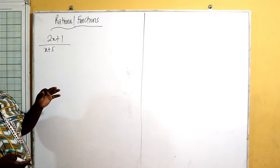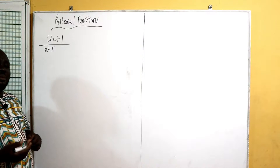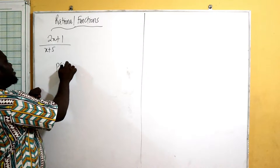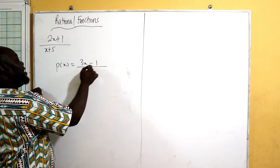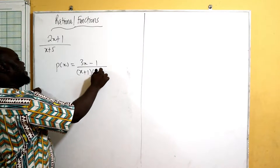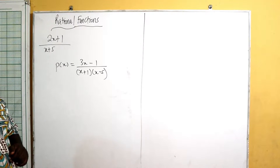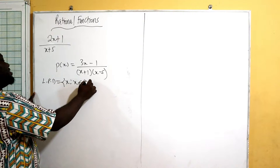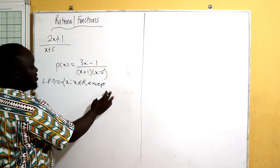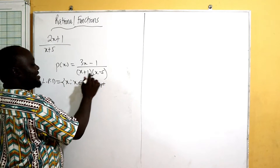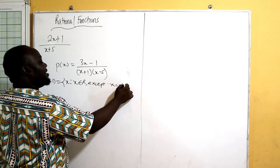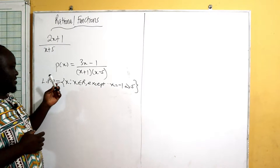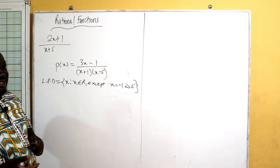We can find the zeros of this function or the largest possible domain. Assuming I have a function p of x equal to three x minus one, over x plus one and x minus five, and I ask you to find the largest possible domain. The largest possible domain is all real numbers except when the denominator is zero — that is, except when x equals negative one and x equals positive five.